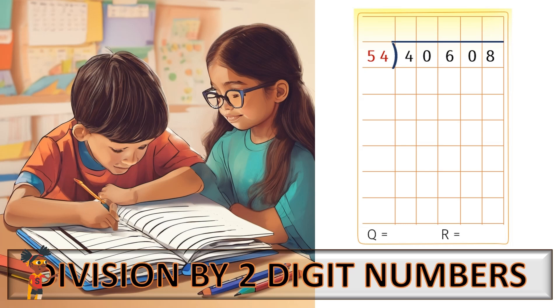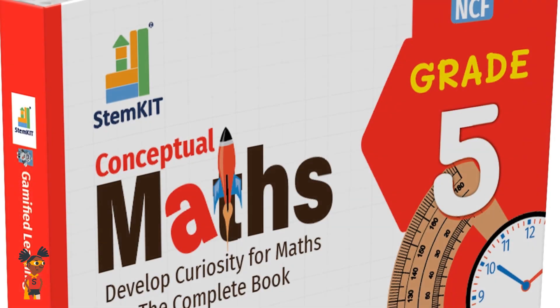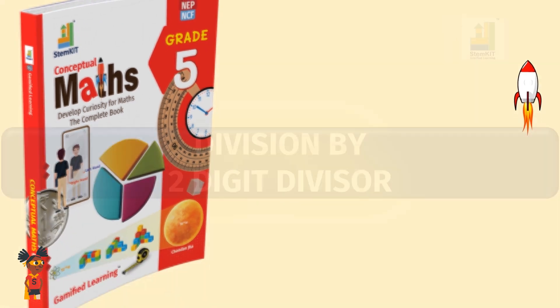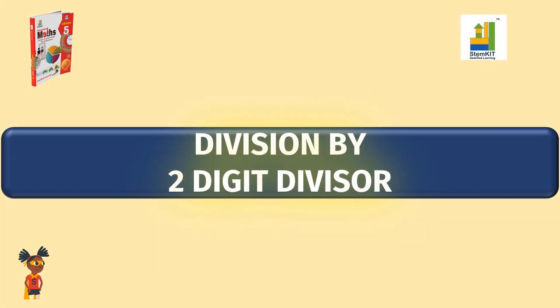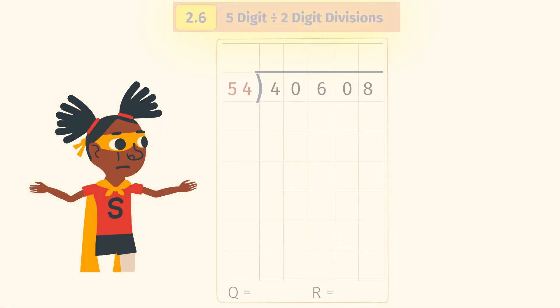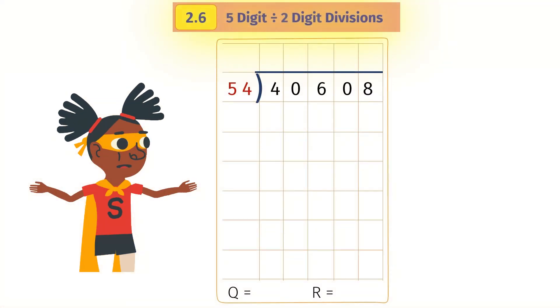STEM Kit Conceptual Maths Grade 5. Division by two-digit numbers. Let's learn how. As an example, let us take 40,608 divided by 54.